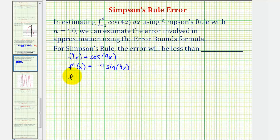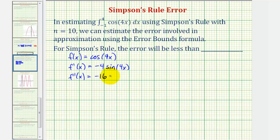Now for the second derivative: that would be negative four times the derivative of sine 4x, which is negative four cosine 4x times four, or negative sixteen cosine 4x.